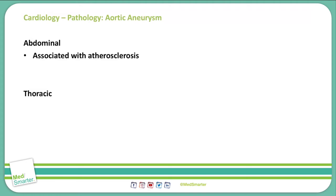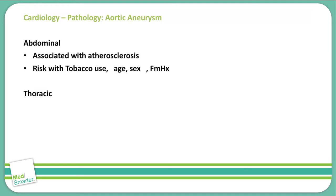Abdominal aneurysms are associated with atherosclerosis, so if you have atherosclerosis, you have an increased risk of forming an abdominal aortic aneurysm. We can also increase the risk with tobacco use. An increase in age will also increase our risk, as will male sex and family history.